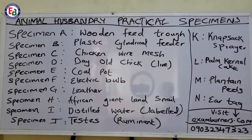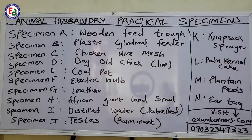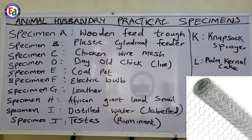The similarities between Specimen A and B is that both are used to feed animals. Moving on to the next specimen — Specimen C: chicken wire mesh. We all know what chicken wire mesh is. It is the wire (iron net) used to contain animals in a cage. Chicken wire mesh is used to cage live chickens, turkeys, or your birds. It is mostly used for birds.